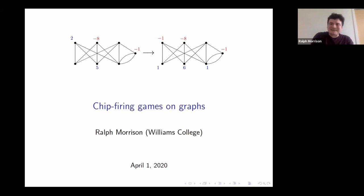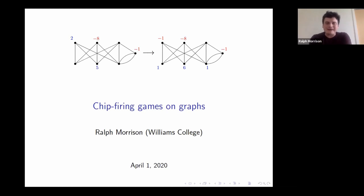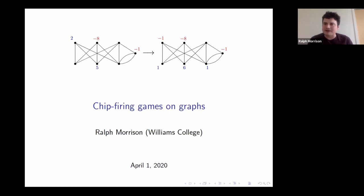Thanks very much for the invitation to speak, and to everyone tuning in either now or in the future. My name is Ralph Morrison. I'm a professor of mathematics at Williams College, and I study lots of different areas of mathematics — some called algebraic geometry, some called tropical geometry. What I'm going to tell you about today lives in the world of graph theory, and in particular it's going to be about some chip-firing games we can play on graphs.